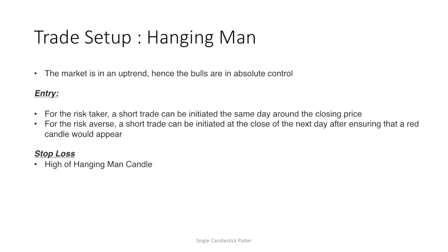For the hanging man, the market is in an uptrend and bulls are in control. Once a hanging man is forming, a risky trader can take entry on the same day around 3:20, ensuring the hanging man is forming. For a defensive player, a short trade can be initiated on the next day of the hanging man candle, ensuring that the next day is in bearish mode.